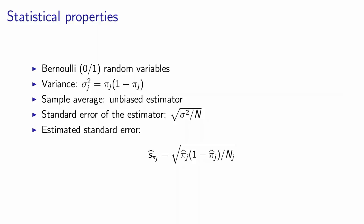Here, the probability that the random variable is 1 is pi j in age category j. And the variance of a Bernoulli variable is given by the probability of a success times the probability of a failure. So it's the probability that the person owns an electric car times the probability that the person does not own an electric car. When you calculate the sample average, like we did in this example, we have an unbiased estimator of the true value of the parameter.